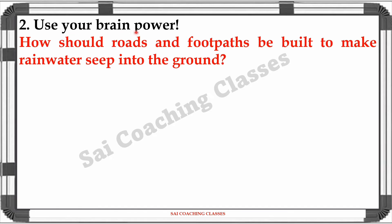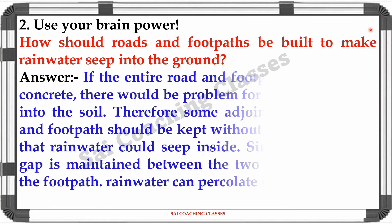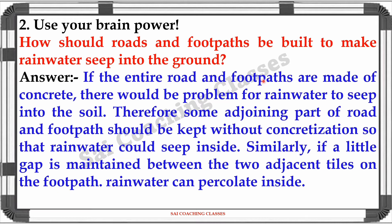Question 2 - Use your brain power. How should roads and footpaths be built to make rainwater seep into the ground? Answer: If the entire road or footpath is made of concrete, there will be a problem with rainwater seeping into the soil. Therefore, some adjoining parts of the road and footpath should be kept without concretization so that rainwater could seep inside. Similarly, if a little gap is maintained between two adjacent tiles on the footpath, rainwater can percolate inside.